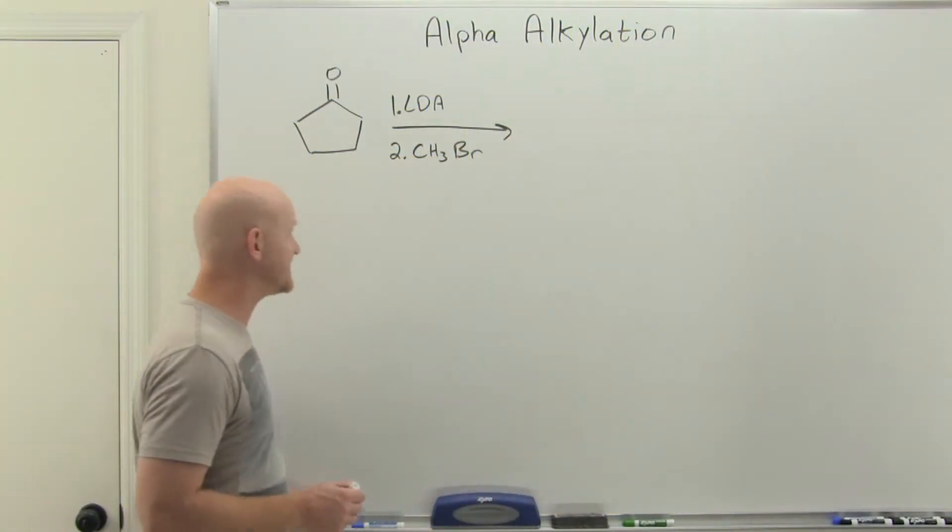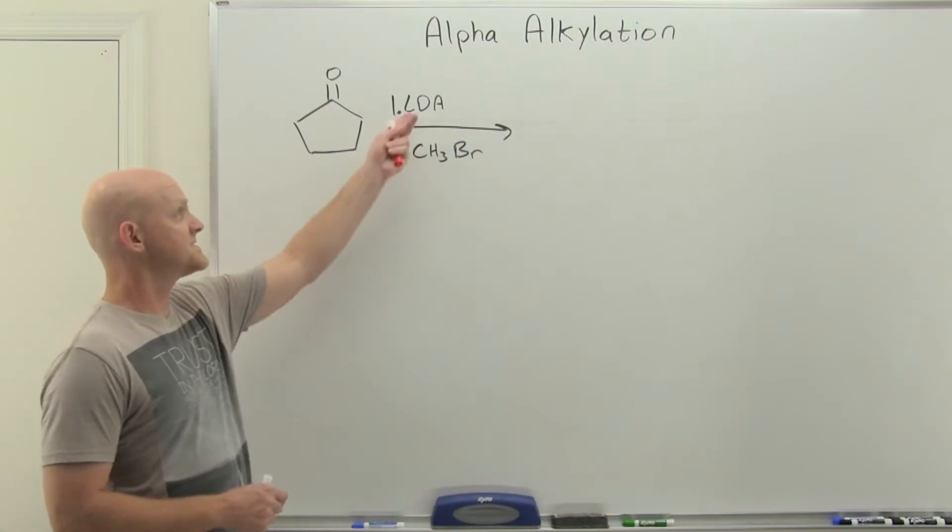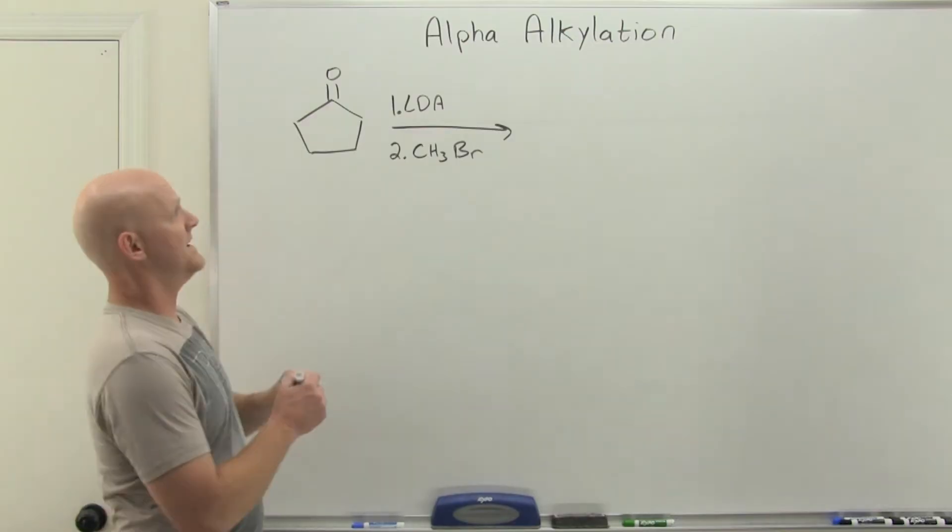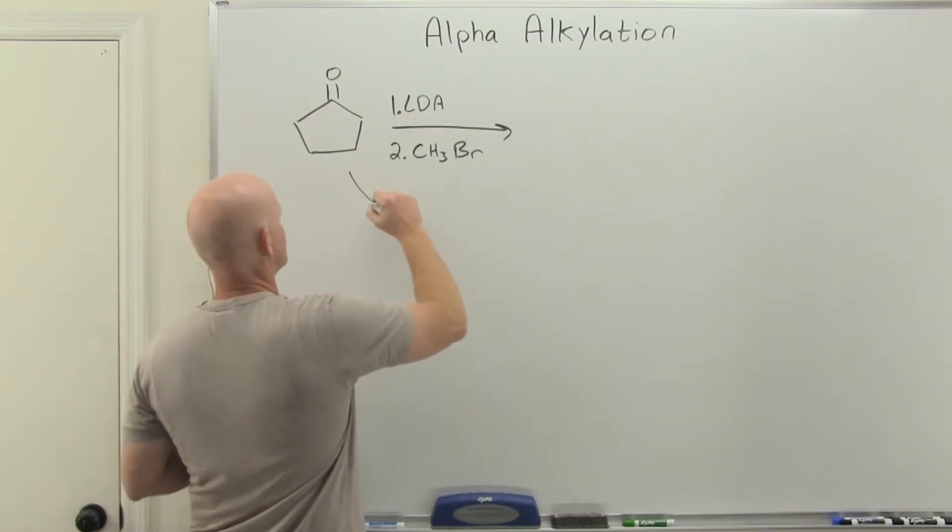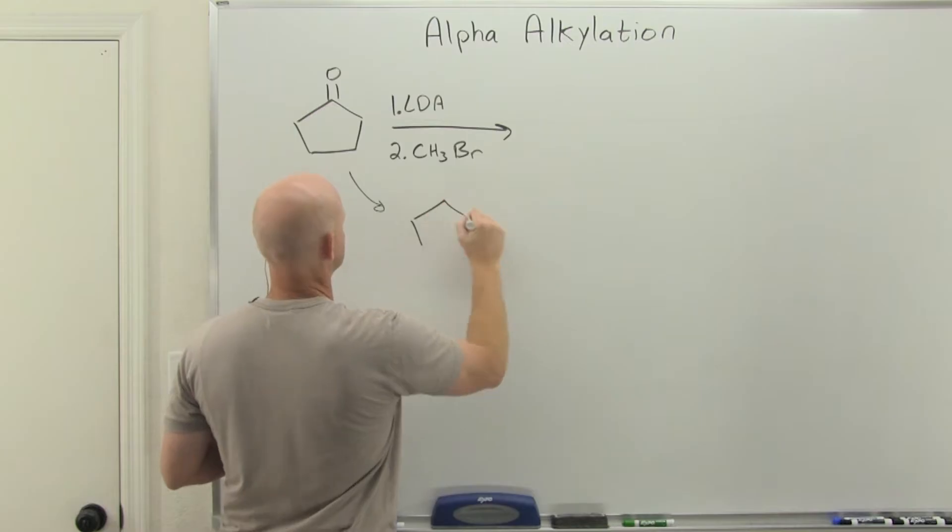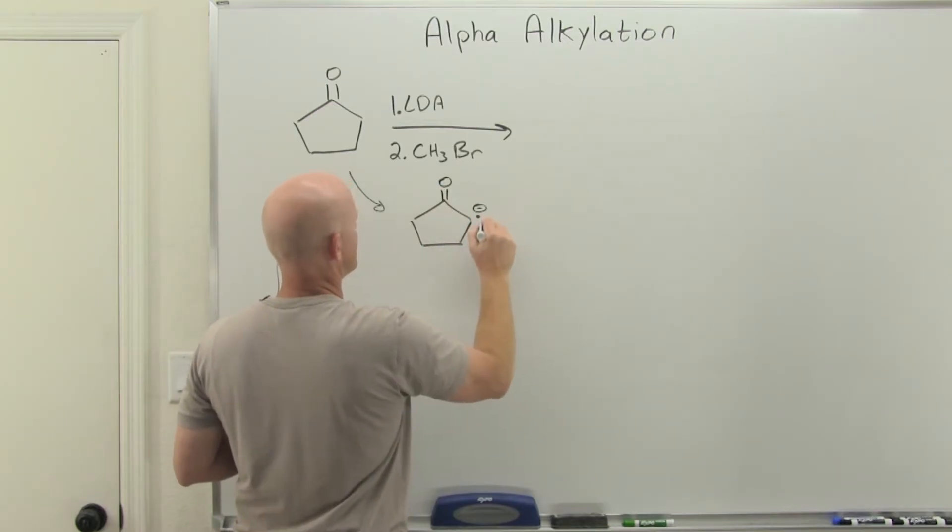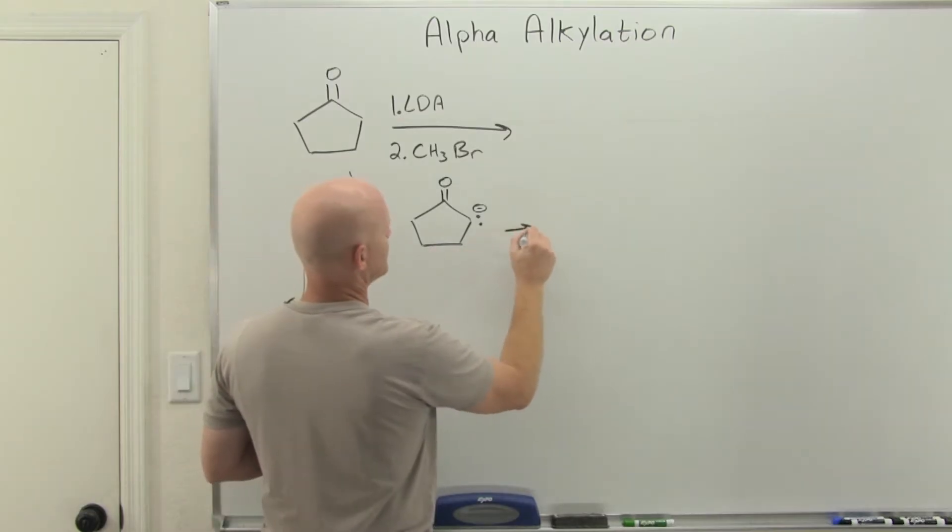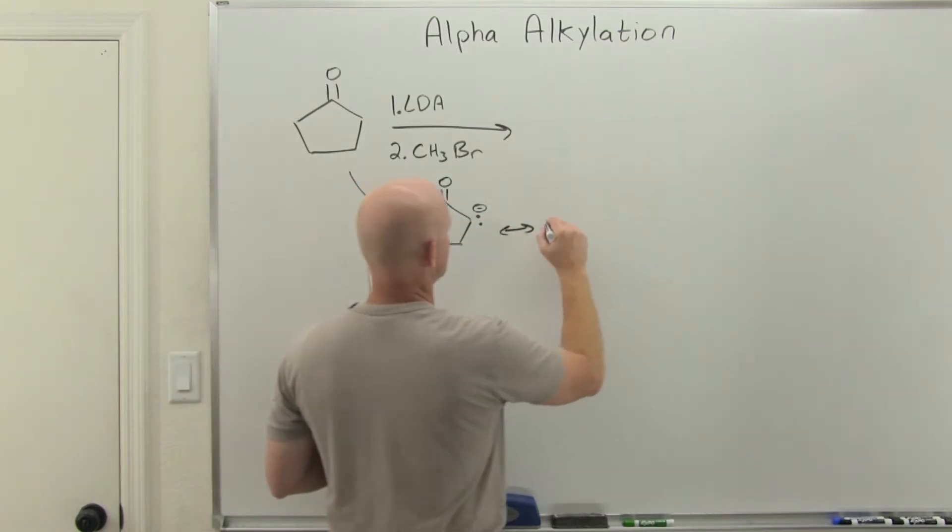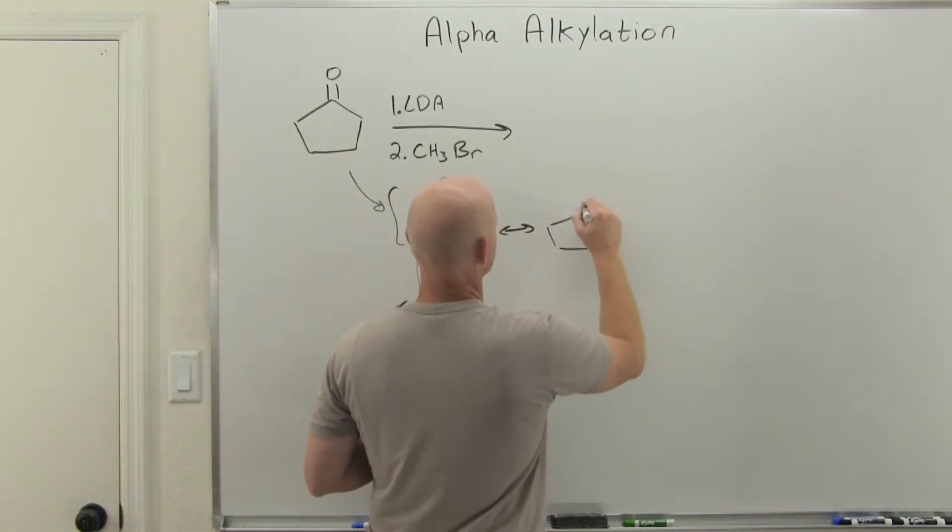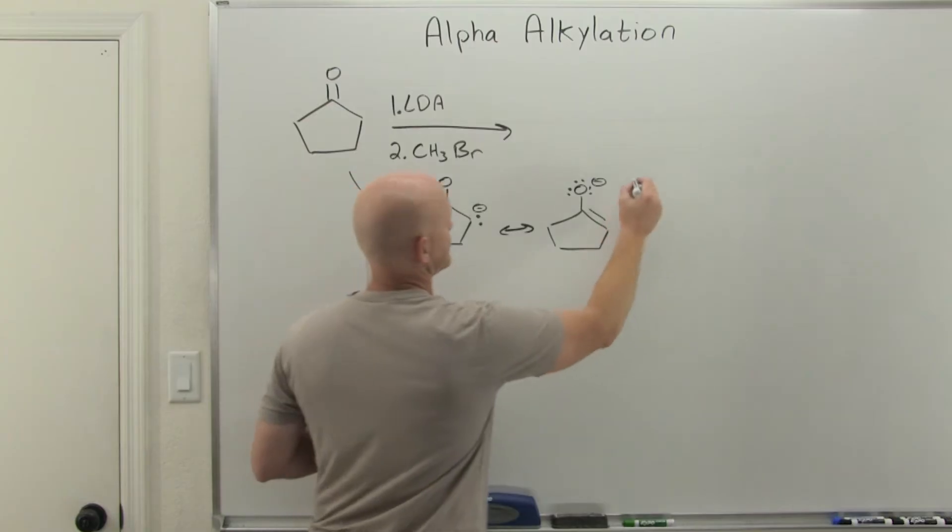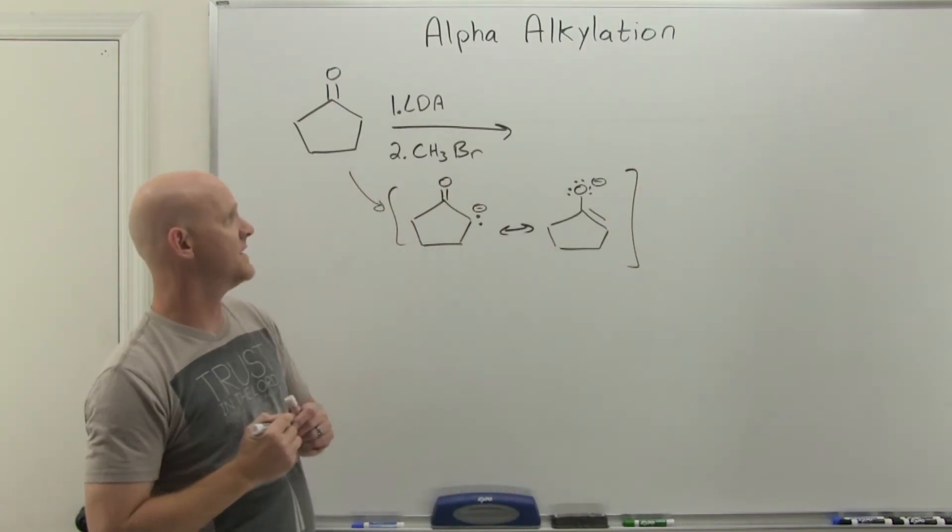All right, so let's take a look at this alpha-alkylation here. In this case, step one is LDA, and LDA is going to help you form that enolate, where we've deprotonated the alpha-carbon, getting us our enolate. And once again, that's just a minor resonance contributor. We want to draw the major one here. And if we're going to try and draw a proper mechanism, we should really use that here.